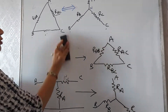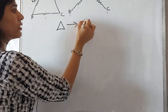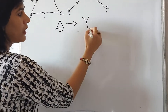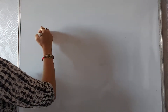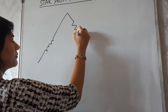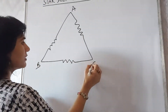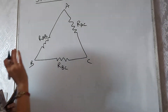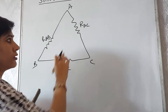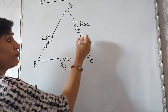Next, we will convert delta into star. First, we do the delta-to-star conversion, meaning we have a delta and we convert it into a star. I draw a delta network with terminals A, B, and C, having resistances R_AB, R_BC, and R_AC. In the numerical, when we find such a network, the resistances R_AB, R_BC, and R_AC are given, and we find the equivalent star.